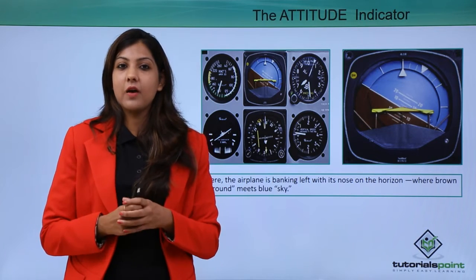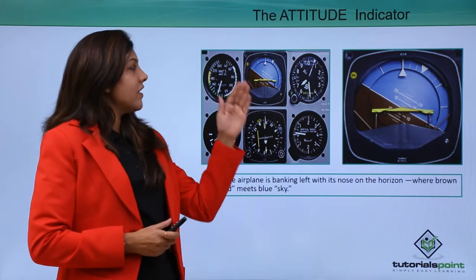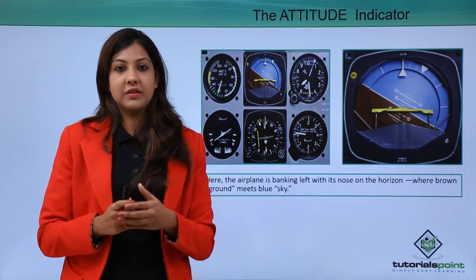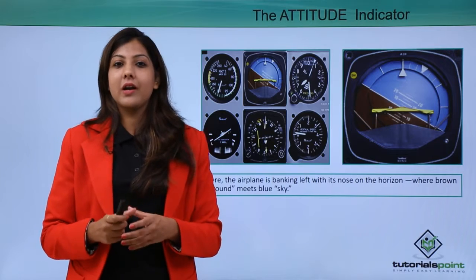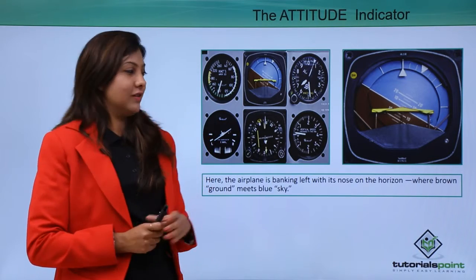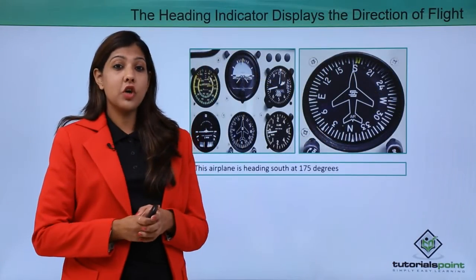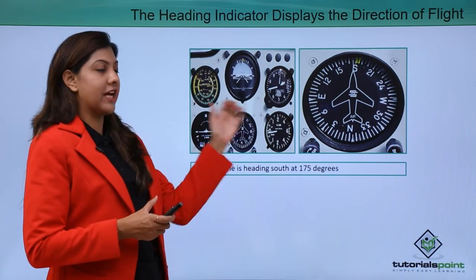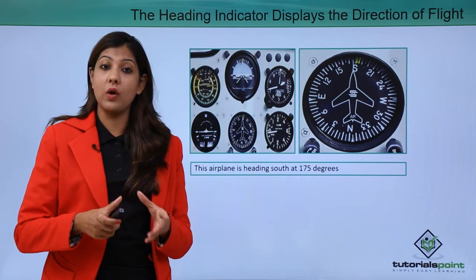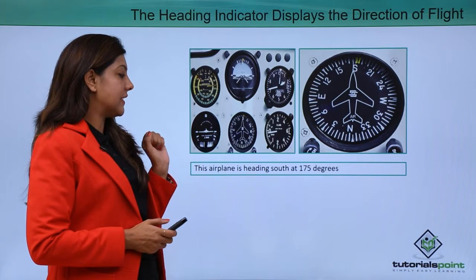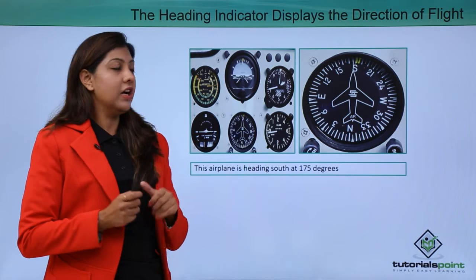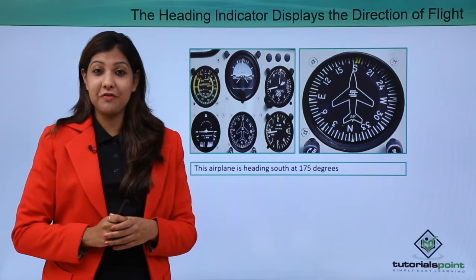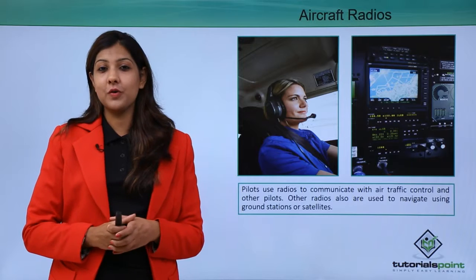The attitude indicator is in front of the cockpit crew and helps them see how far above the ground they are — for example, 30,000 or 35,000 feet above mean sea level — allowing them to announce altitude to passengers. There is also a heading indicator showing direction: north, south, east, or west. For example, a diagram might show the airplane heading south at 175 degrees, helping the pilot confirm they are on the correct course.